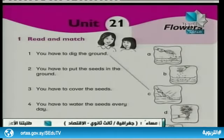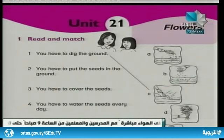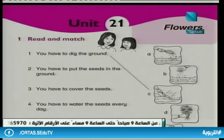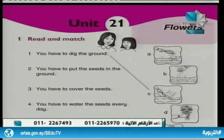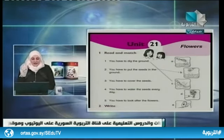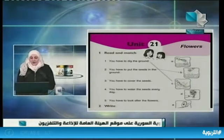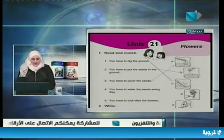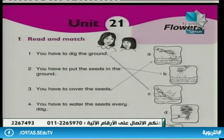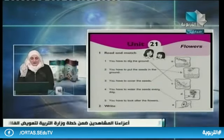Now let's read and match. In your activity book you have 'listen and match.' Number one: you have to dig the ground — Picture C. Number two: you have to put the seeds in the ground — Picture B. Number three: you have to cover the seeds — after putting the seeds in the ground you cover them. Number four: you have to water the seeds every day — Picture A. Number five: you have to look after the flowers — Picture E, Picture D.